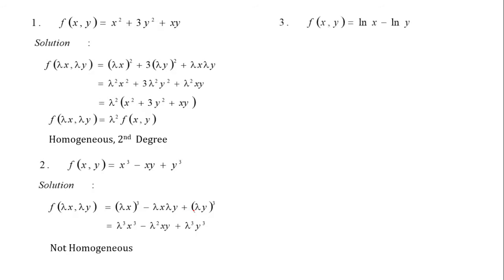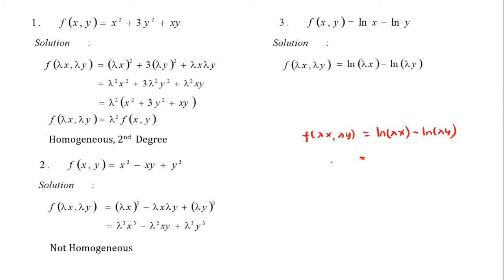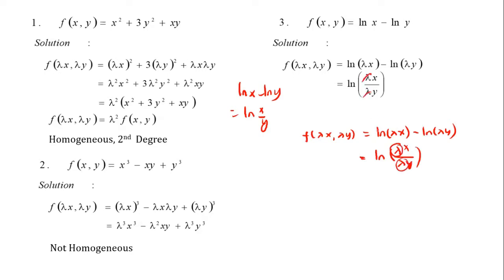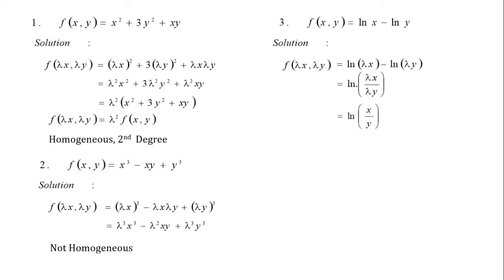Another example: f(x,y) = ln x - ln y. Replacing x by λx and y by λy, and using the logarithmic property ln x - ln y = ln(x/y), we get ln(λx / λy) = ln(x/y). The lambdas cancel, leaving f(λx, λy) = f(x,y), so this is a homogeneous equation of degree 0.